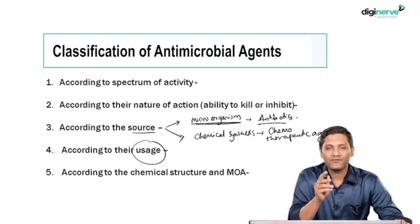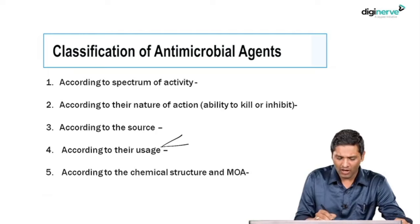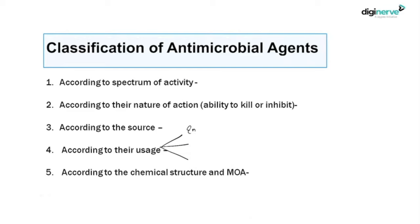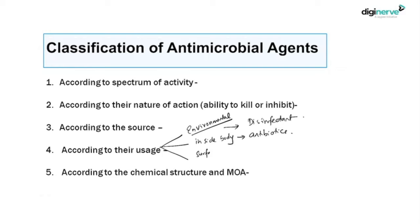We can also classify antimicrobial agents based upon their use — whether you are going to use them inside the body, on the surface of the body, or in the environment. Agents used for environmental cleaning are called disinfectants. Agents used inside the human body are known as antibiotics. Those used on the surface of the human body are known as antiseptics — they are topical agents.